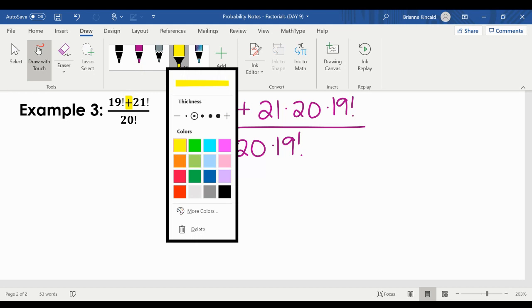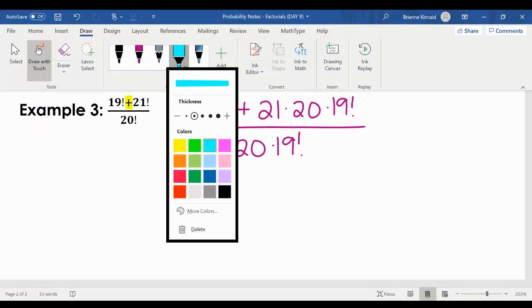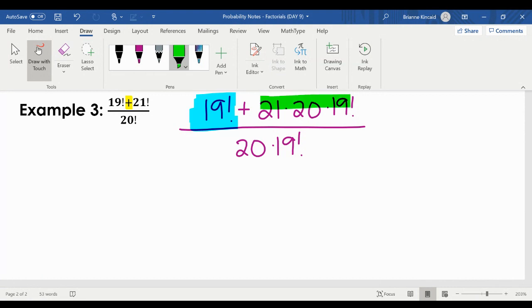The reason why we do this is because when you have multiple terms, remember terms separated by addition and subtraction, you want to try to factor out something that they both share. We call that a GCF, a greatest common factor. So this one highlighted in blue, this is my first term, 19 factorial. My second term highlighted in green is 21 times 20 times 19 factorial. The thing that they both share in common is the 19 factorial. So I take it out in front.